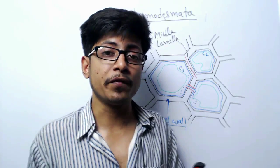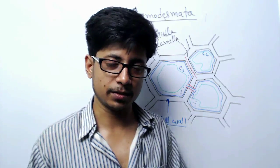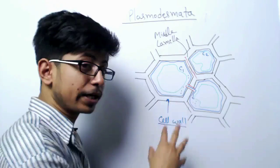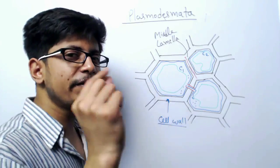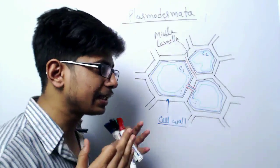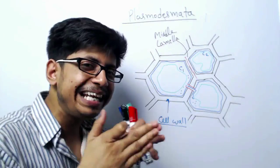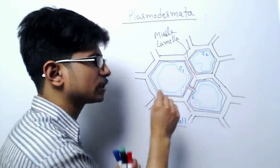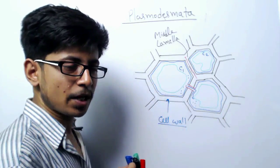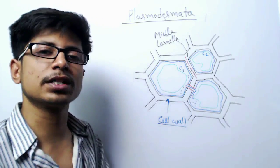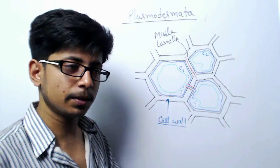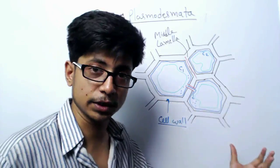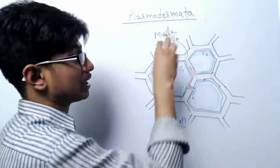Plasmodesmata is a very smart way for cells to convey messages between each other. If one cell produces a protein that needs to be spread to the nearby cell, they use this specific structure called plasmodesmata, which is nothing but a cytoplasmic linkage between two adjacent cells. So they can move proteins, mRNA, large molecules like glucose, and other food sources from one cell to the adjacent cell. That is the function of plasmodesmata.